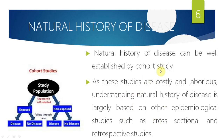Natural history of disease is best studied through a cohort study — a prospective study starting with disease-free persons and following them over time until disease develops. Though laborious and costly, it is the most accurate method. Cross-sectional and retrospective case-control studies are also used. The cohort study is best because the disease has not yet occurred at the start, so its development can be observed clearly.